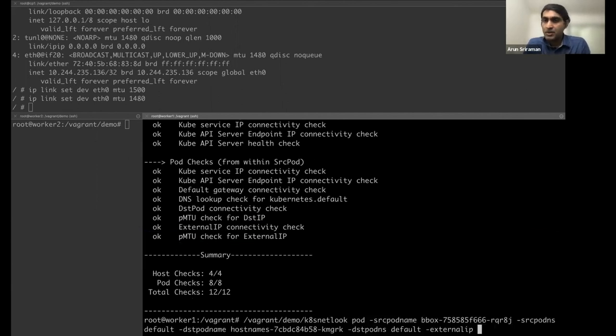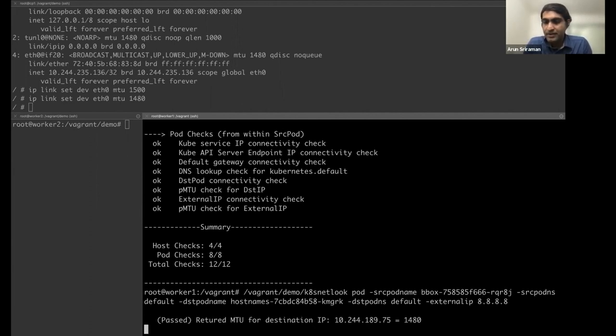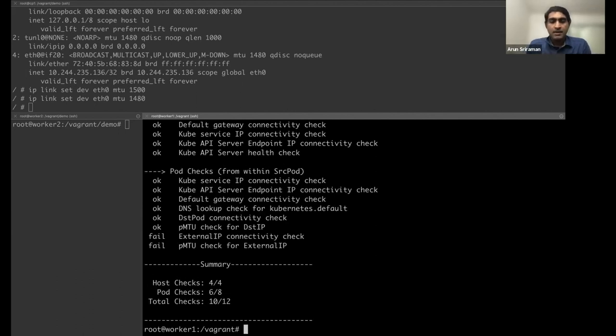More checks added to it. And you can see that the external IP connectivity check also works. I have an issue on my laptop running. I'm running vagrant boxes on the laptop for this demo. So if I try to use external IP 8.8.8.8, that is an issue. And you will see that with the tool.